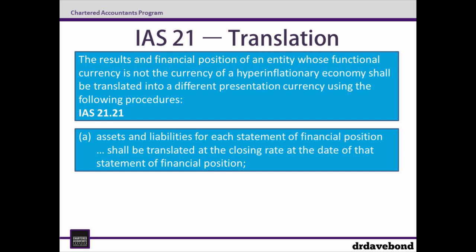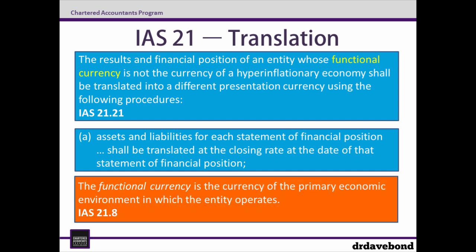Part A discusses assets and liabilities and how they should be translated at the closing rate at the date of that statement of financial position. At this point a few definitions are useful. First, functional currency: the functional currency is the currency of the primary economic environment in which the entity operates.